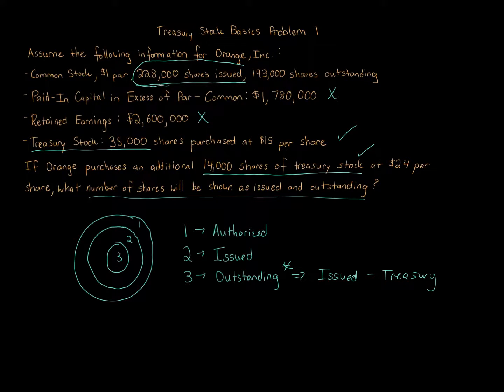Now the issued shares—that's going to be 228,000 even in the end, even after we've gone through the treasury stock. Remember, outstanding is issued minus treasury. The issued shares haven't changed since the beginning, 228,000, which is the correct answer for the issued. We subtract away the sum of the 35,000 that we were told.